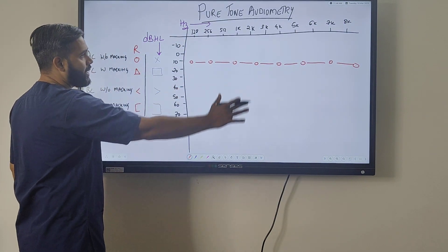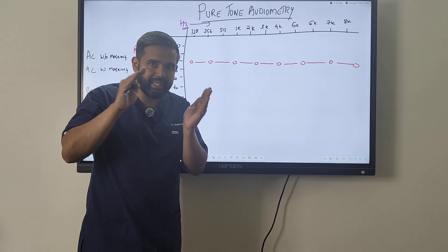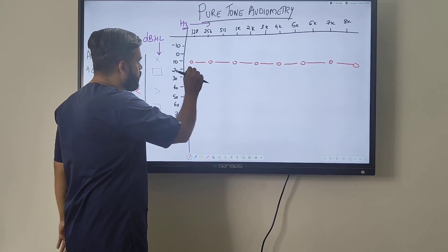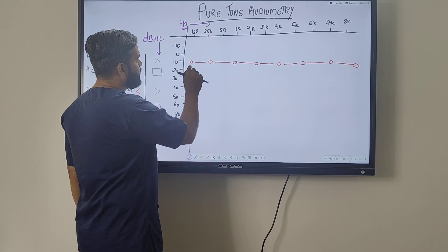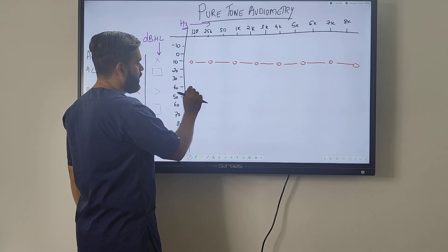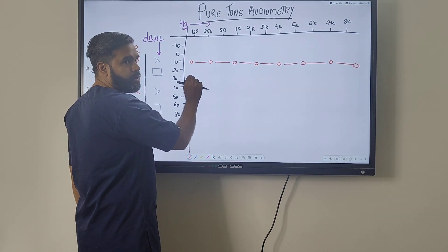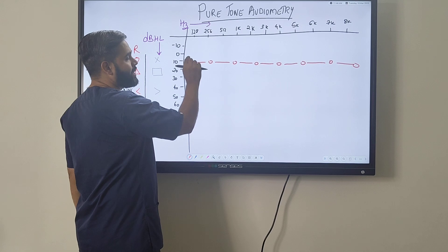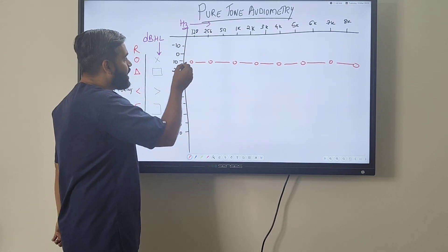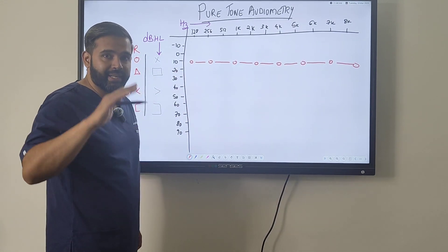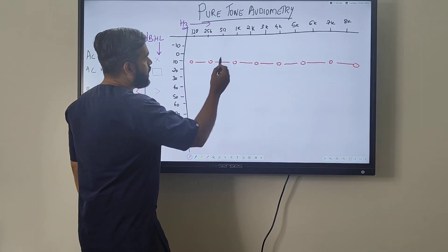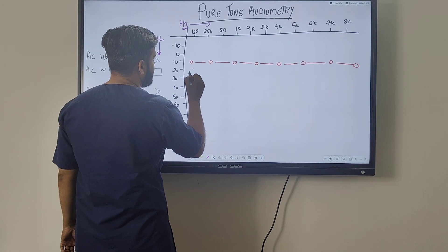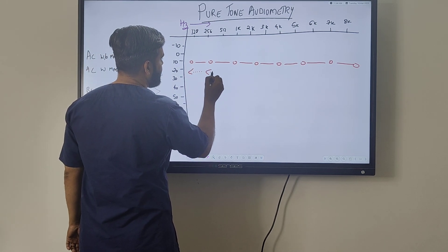We plot against this graph by asking the patient what is the least they can hear — it's a threshold test. The examiner gives sound at 40 decibels, patient says they can hear; then 30, 20, 10 decibels — patient confirms hearing each time. Below 10 decibels the patient cannot hear, so it's plotted at 10 decibels. This threshold is determined for each frequency for air conduction, then repeated with bone conduction shown by dotted lines.